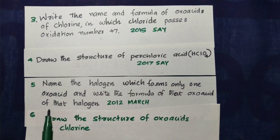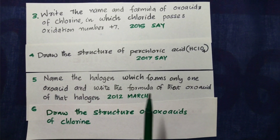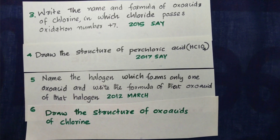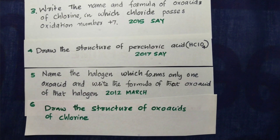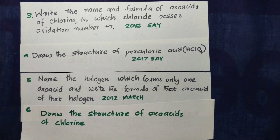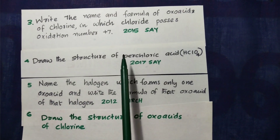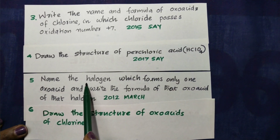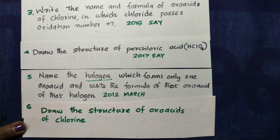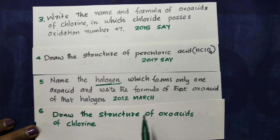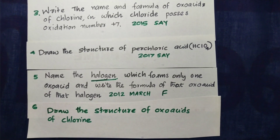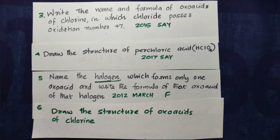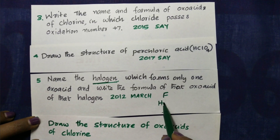Now we will talk about two groups here. We will talk about oxoacids of chlorine, oxoacids of sulfur, and oxoacids of phosphorus. All halogens form oxoacids. Fluorine forms hypofluorous acid.